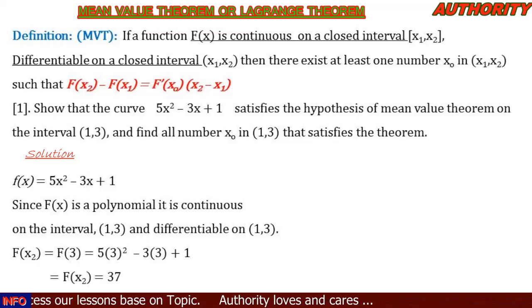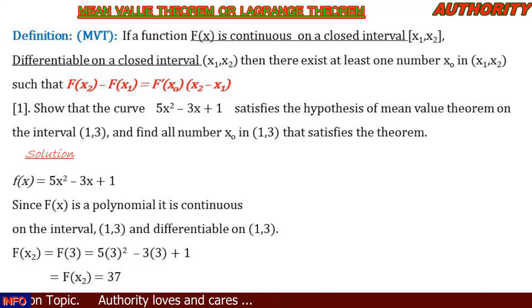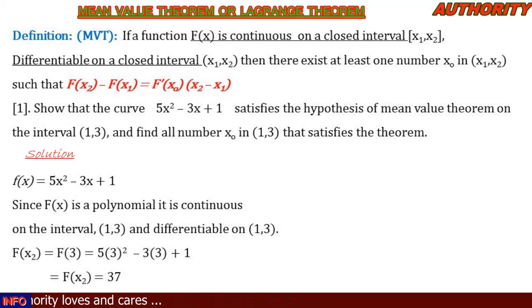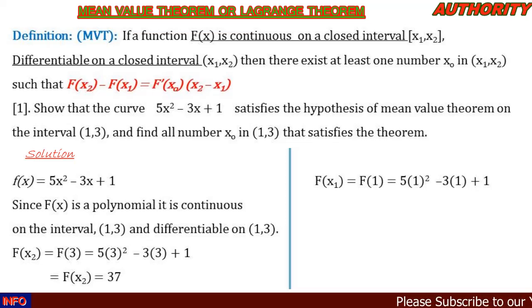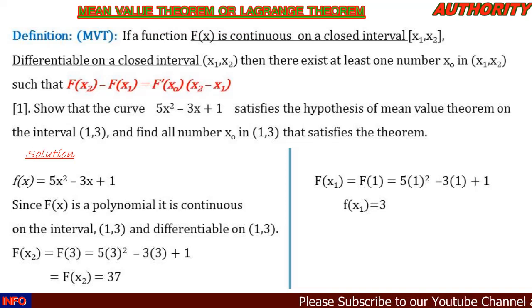When we solve this, f(x2) = f(3) = 37. Let's also evaluate f(x1): f(x1) = f(1) = 5(1)² − 3(1) + 1. When we solve this, we get f(x1) = 3.